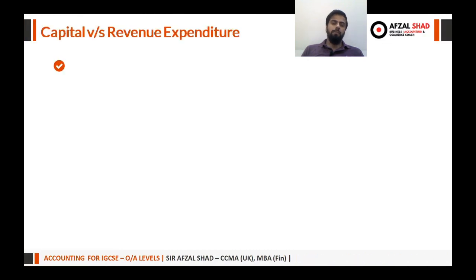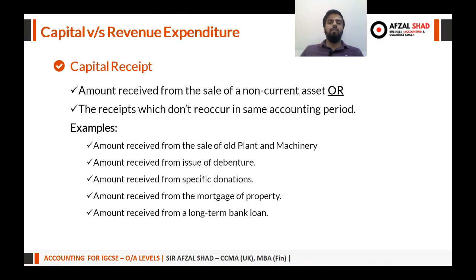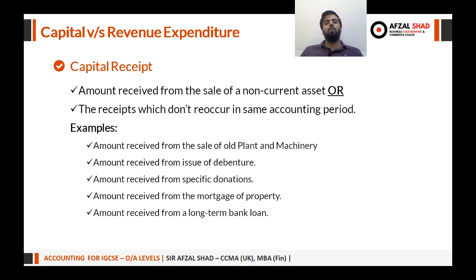What is a capital receipt? A capital receipt is the amount received from the sale of a non-current asset — it is the exact opposite of capital expenditure. Capital receipts are also receipts which do not reoccur in the same accounting period. Sometimes we are not buying non-current assets, but some receipts do not repeat or recur in the same accounting period.